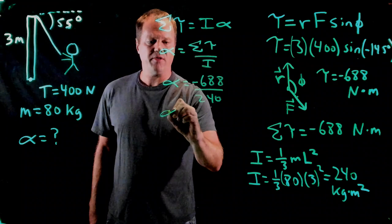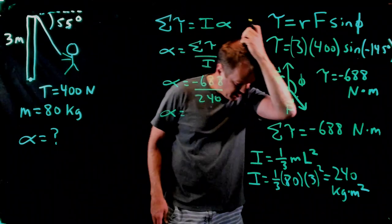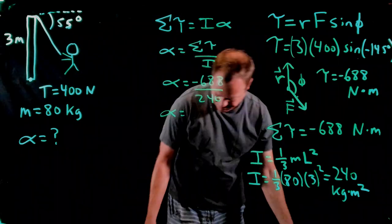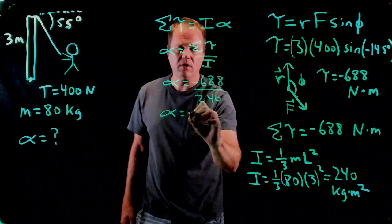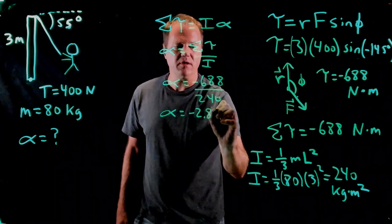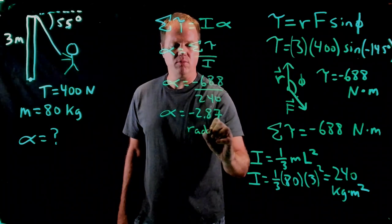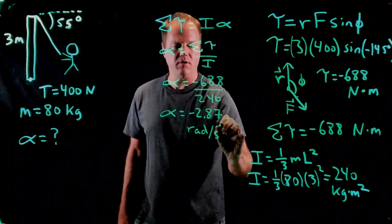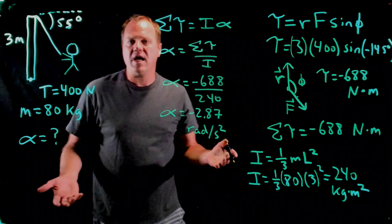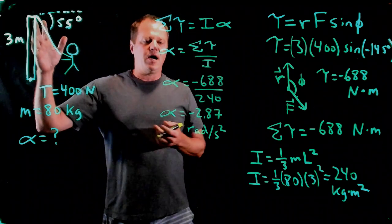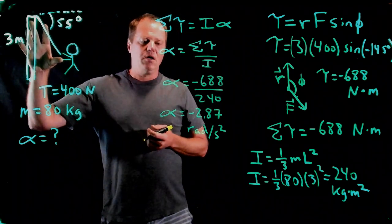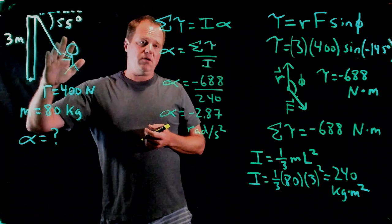And so the torque of negative 688 divided by the moment of inertia of 240, and I throw that into my calculator, and it spits out an answer of negative 2.87 in SI unit. Since I put SI in, I'll get SI out, negative 2.877 radians per second squared. What does the negative sign mean? It just means that I'm inducing a clockwise angular acceleration.